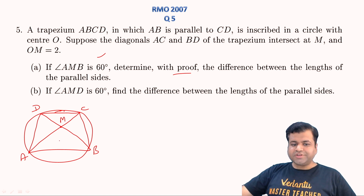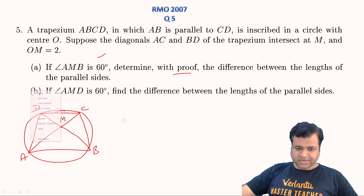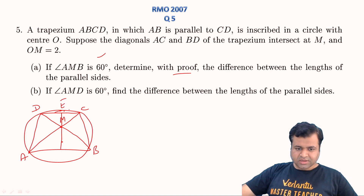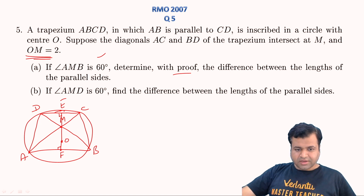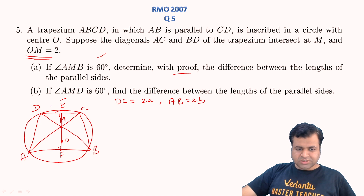If angle AMD is 60 degrees, the center will be outside the trapezium; if AMB is 60 degrees, the center will be inside. Let's draw the diagram. Let E be the foot of the perpendicular from O to CD, and F be the foot of the perpendicular from O to AB. Let DC = 2A and AB = 2B, so DE = A and AF = B. OM is given as 2.